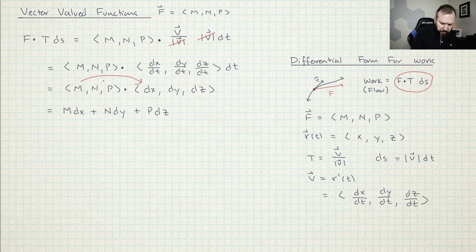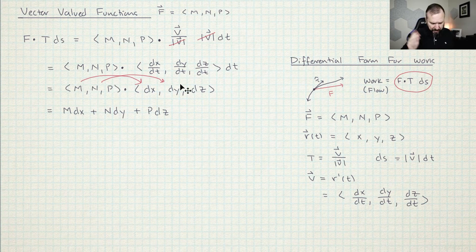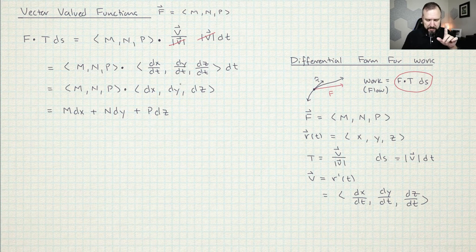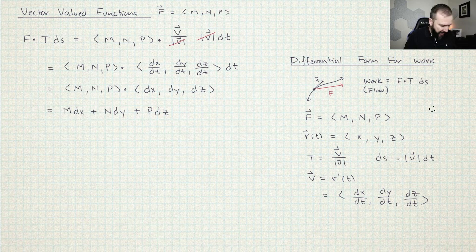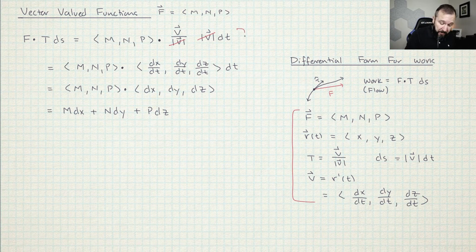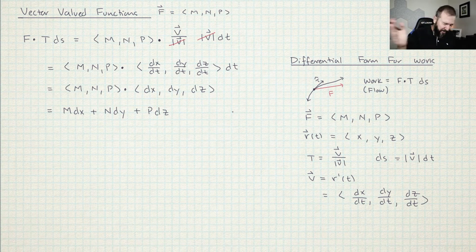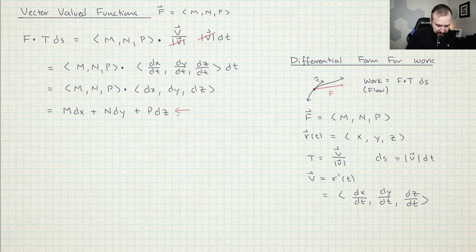One way to think about this formula is that if you were actually doing an example and working out the definition F dot T DS, you would go through this whole process every time, and every time all these things would just cancel out. So why do a bunch of derivatives and then have a bunch of things cancel when it's going to happen every time? Let's just jump straight to this step.